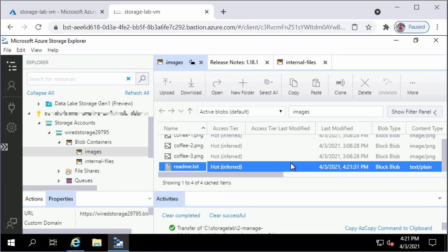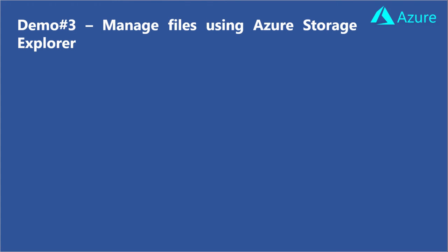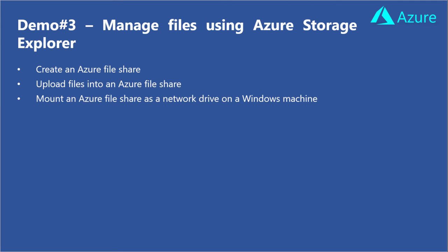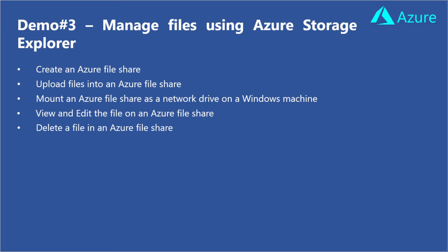This is how you upload files into a blob container. In the third demo, I will show you how to manage files using Azure Storage Explorer — how to create Azure file shares, upload files to a file share, and mount an Azure file share as a network drive on a Windows machine. I will also show you how to view and edit files on an Azure file share as if those files were locally available, and how to delete a file from an Azure file share.